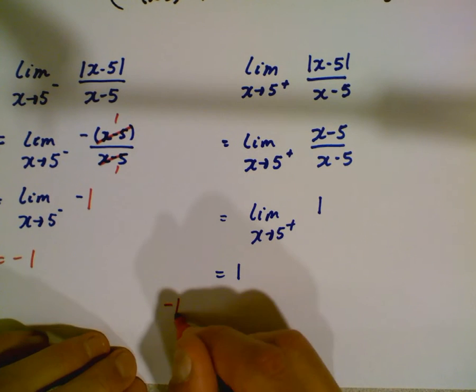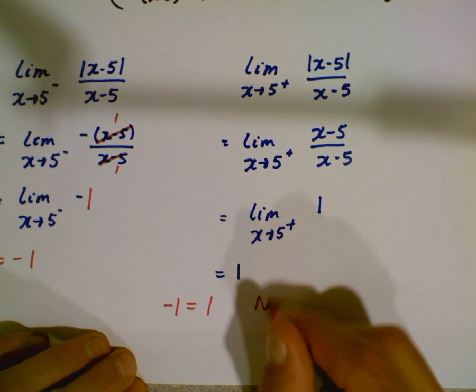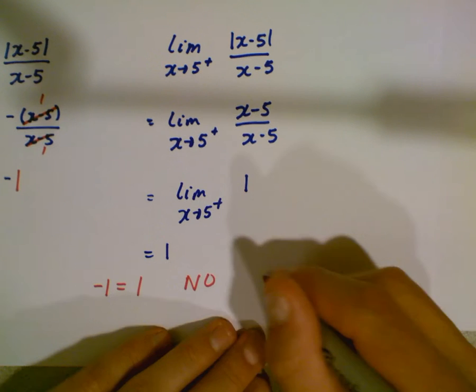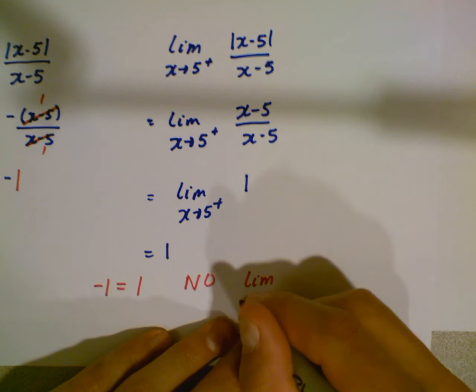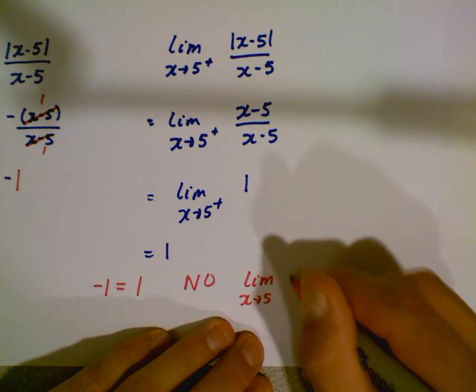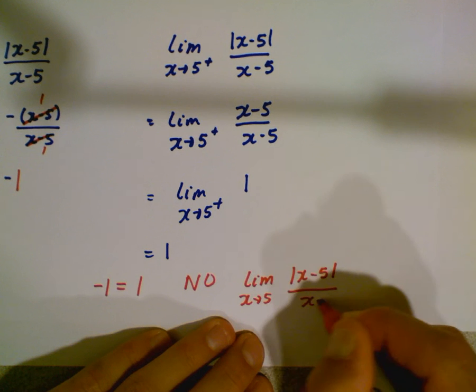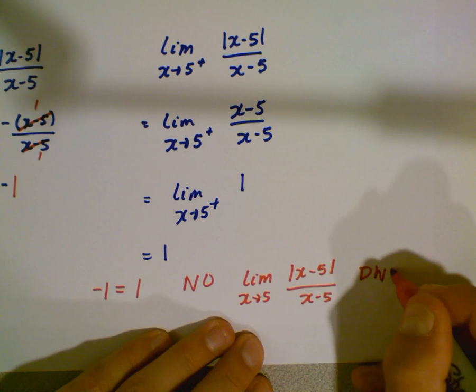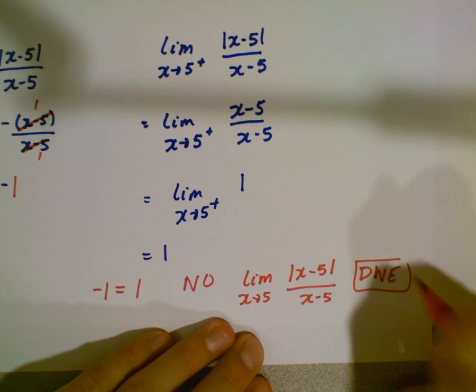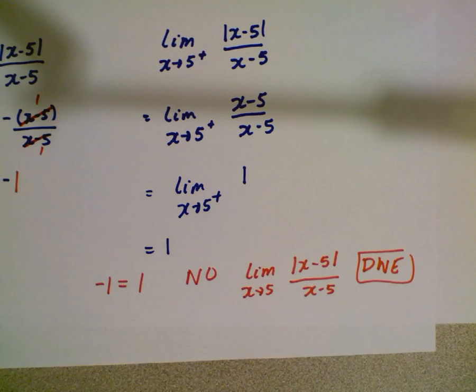Negative 1 does that equal 1? No. So the limit as x approaches 5 of the absolute value of x minus 5 over x minus 5 does not exist. If you have any questions or comments you can type them below. Hopefully that helps you with finding limits algebraically of absolute value functions.